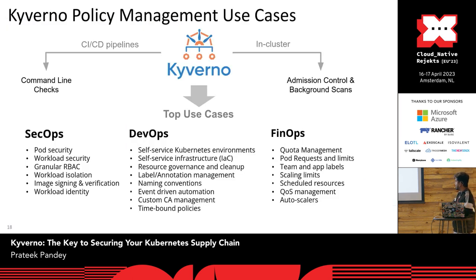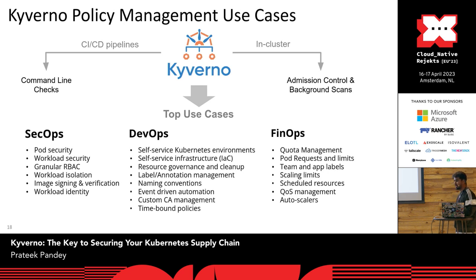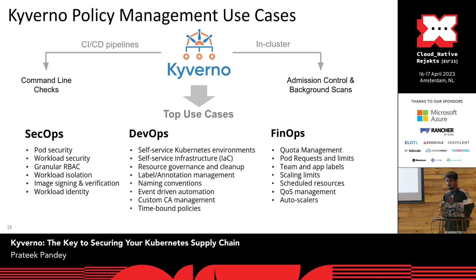These are the different use cases based on different teams: SecOps, DevOps, or PlatformOps. SecOps can handle pod security, workload security, granular RBAC control, multi-tenancy, workload isolation, and image signing and verification. Similarly, DevOps use cases include mutating resources, managing certificates, updating config maps, and restarting pods based on config map changes. Kyverno has widespread use cases for each kind of team.